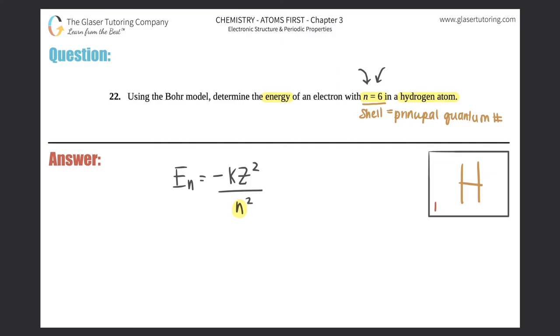Now we just got to figure out what these variables are. We're solving for the energy, so we're solving for En. k, we should know is that Rydberg constant, it's 2.179 times 10 to the negative 18 joules.